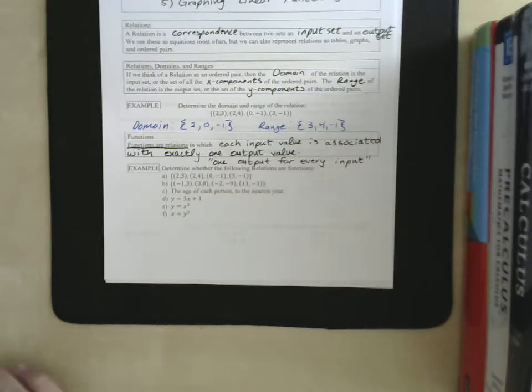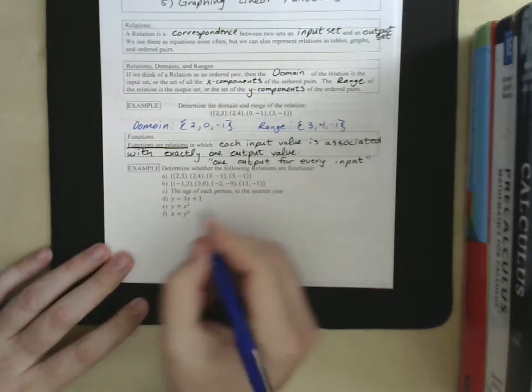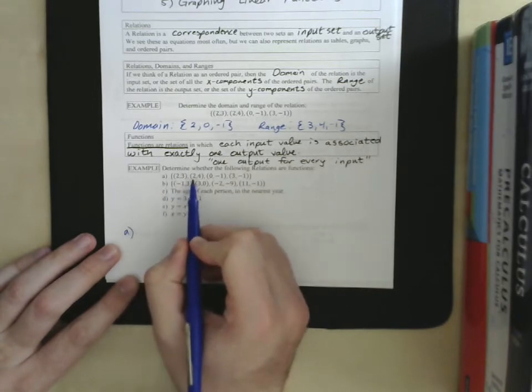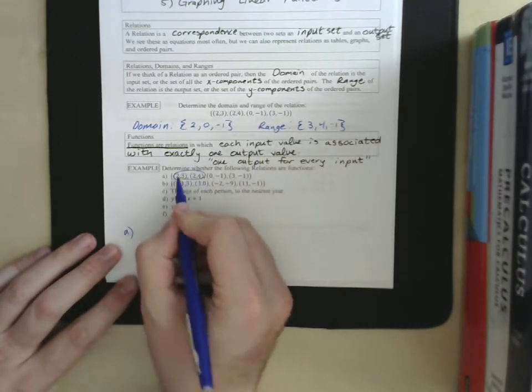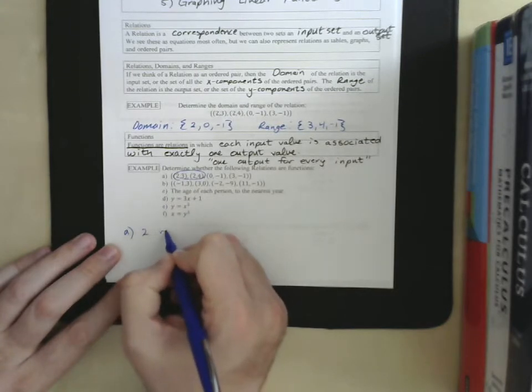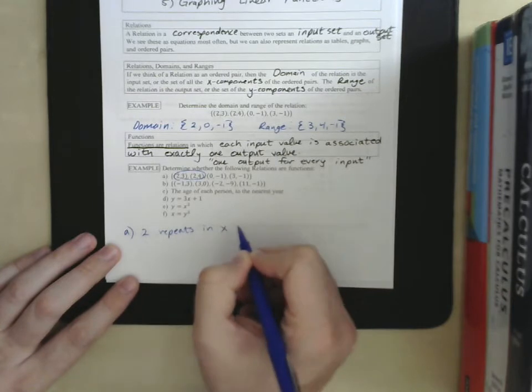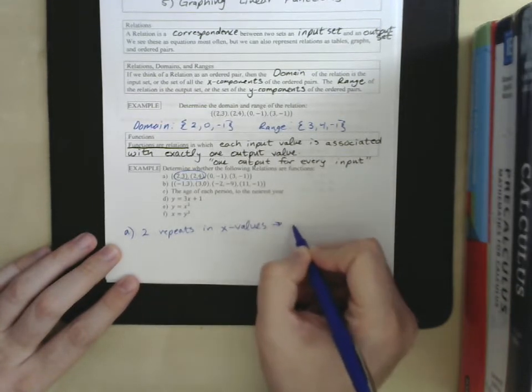Let's see if we can identify these functions in the next example. We have five, six of them here. In A we have 2, 3, 2, 4, 0, 1. Oh, it's the same set. So this, as we just said, since the two repeats in the X's means it's not a function.